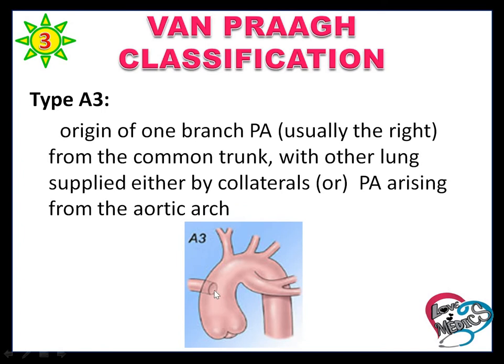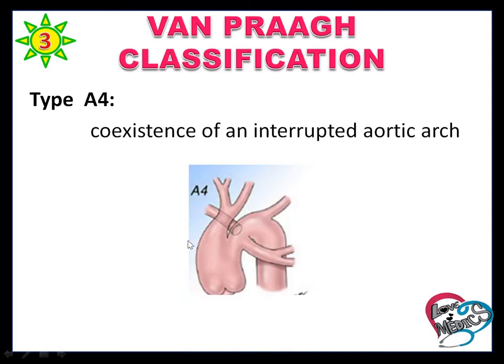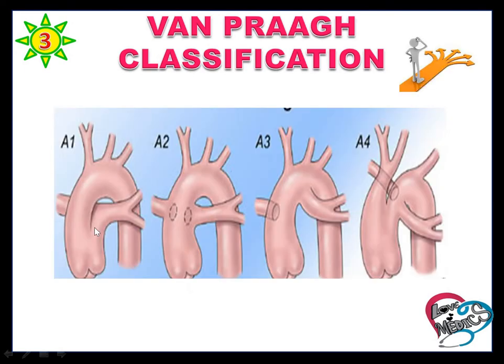Van Praagh Type 3: the right pulmonary artery arises from the right posterior aspect of the common trunk, and the other trunk arises from the aortic arch. Type 4: the right and left pulmonary arteries both arise from the aortic arch.